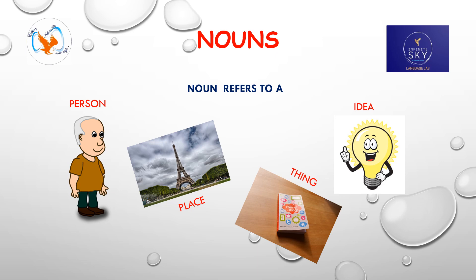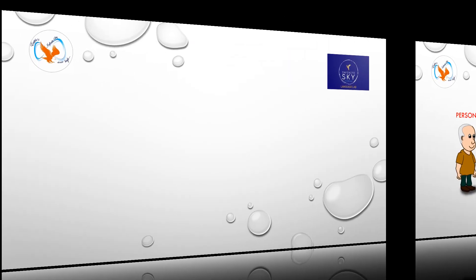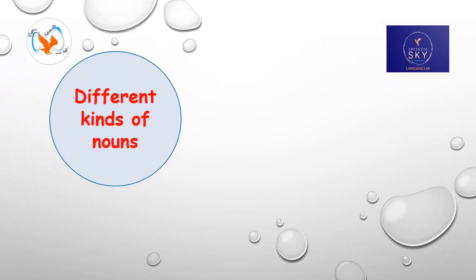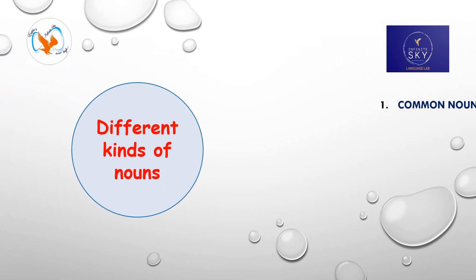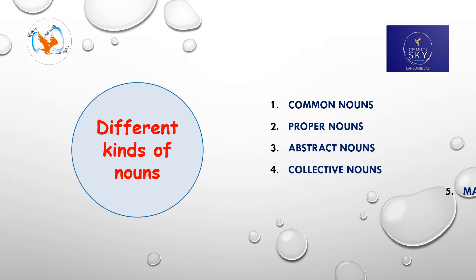In most cases, a noun works as a subject in a sentence, but not always. Sometimes they can also play the role of an object and an adjective. Nouns can be classified into common nouns, proper nouns, abstract nouns, collective nouns and material nouns.